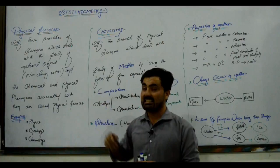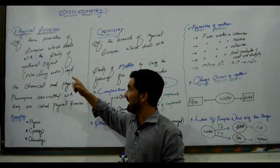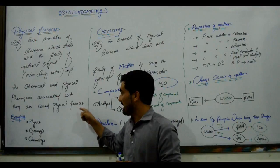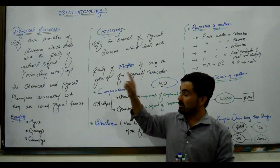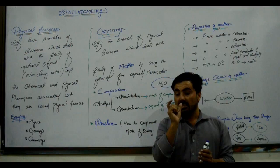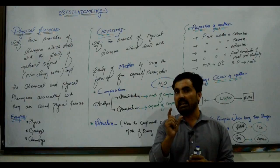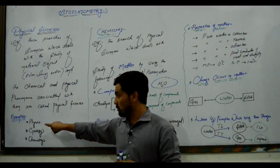First, let's look at physical sciences. Physical sciences are those branches of science which deal with the study of material objects — meaning non-living bodies — and the chemical and physical phenomena associated with them. In short, physical sciences study non-living objects and the changes that occur in them.